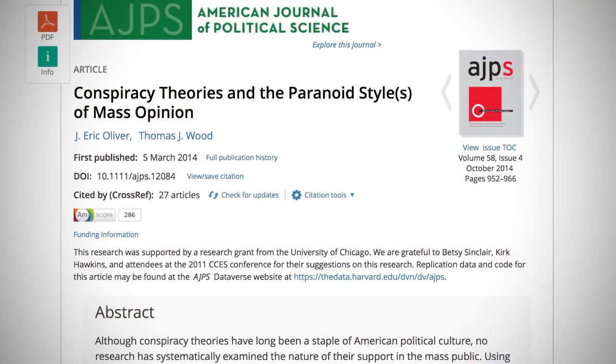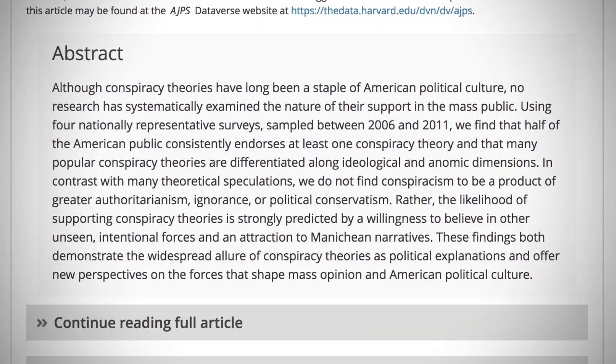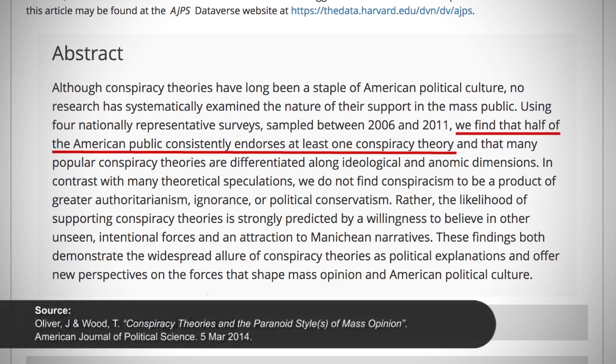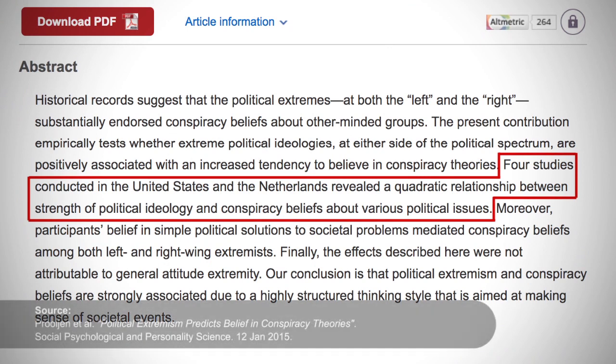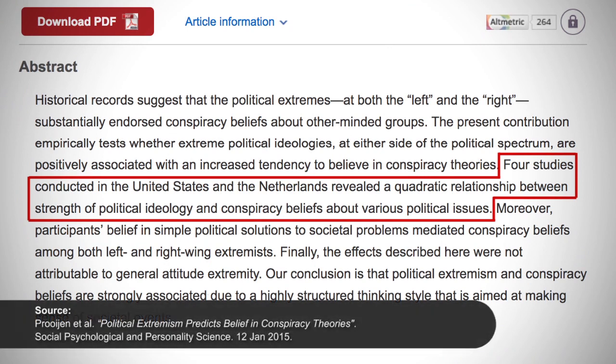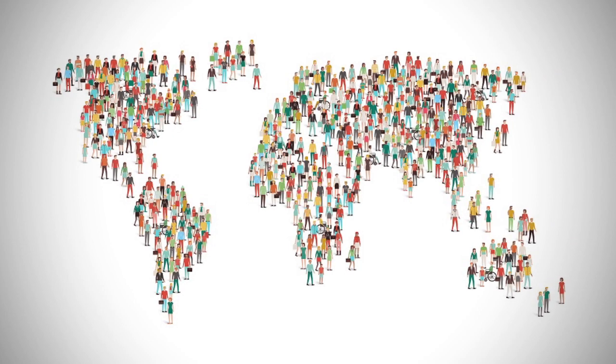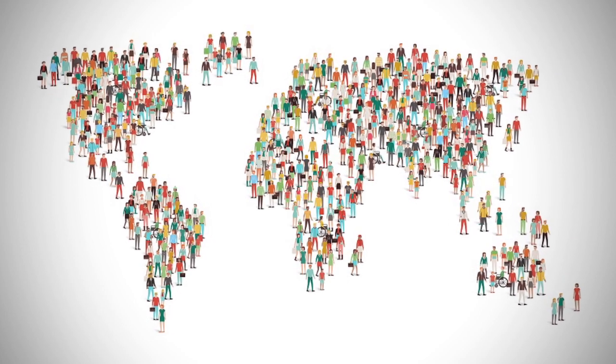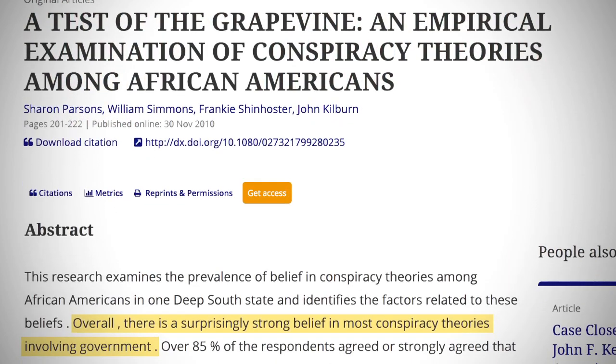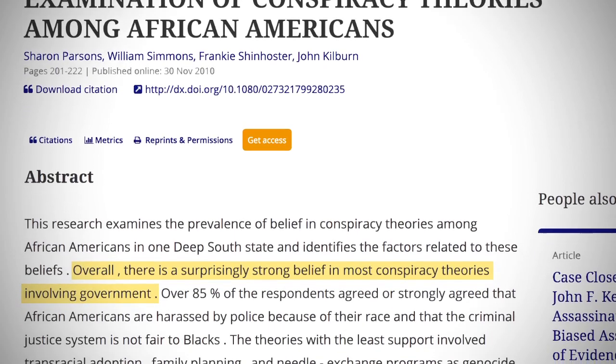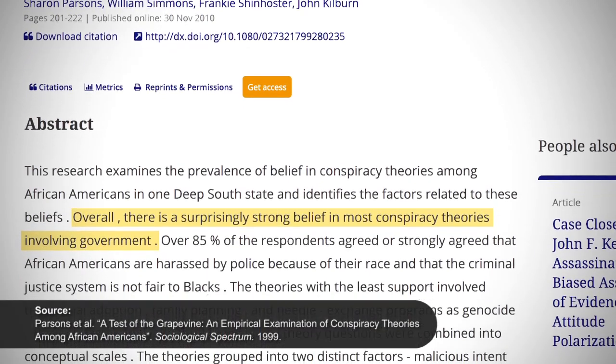So, who believes in conspiracy theories? Surveys between 2006 and 2011 on the American public found that half of the population endorses at least one conspiracy theory. Politically, extremism on both the left and the right and belief in conspiracy theories are highly correlated. There are relatively few demographic factors that predict conspiracy theory beliefs. However, African Americans tend to believe more in conspiracy theories and Hispanics and Caucasians less. These findings have been replicated several times.